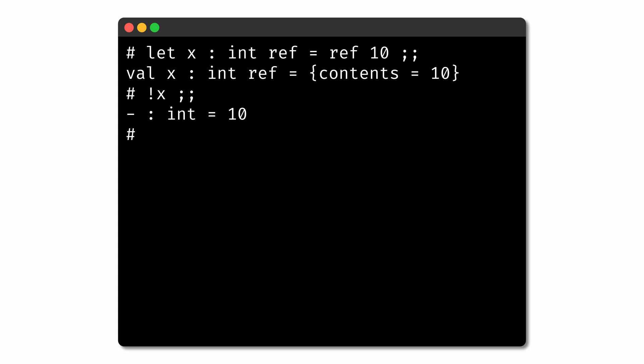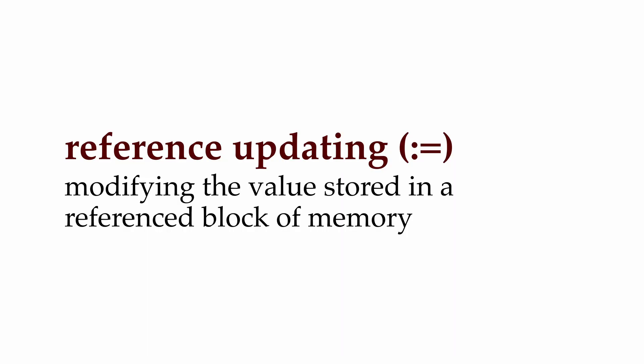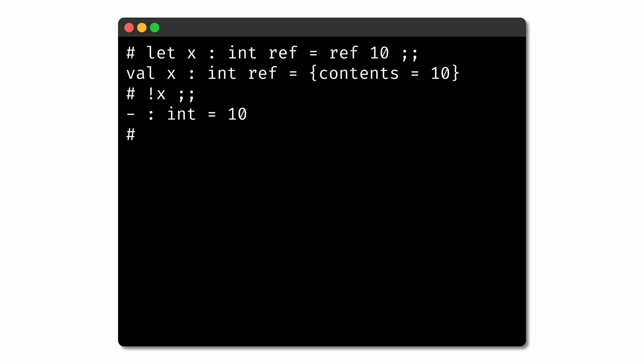The power of references comes with our ability to mutate the referenced memory. This is done via the update operator, a colon and an equal sign. If we update the reference x to 20, x still points to the same block of memory, but now we've updated that block of memory to store the value 20. If we then dereference x, we'll get the integer 20.